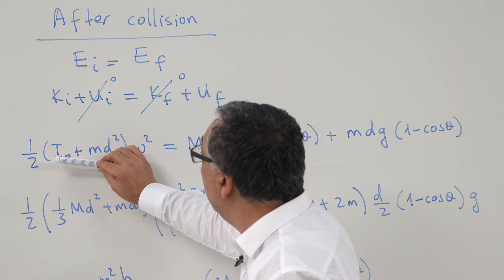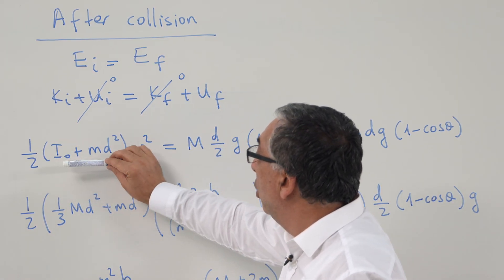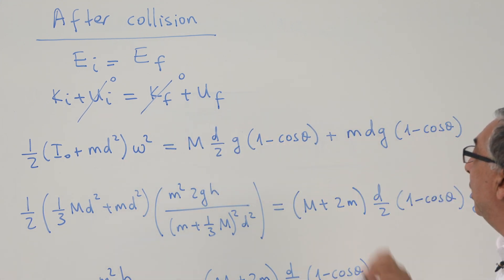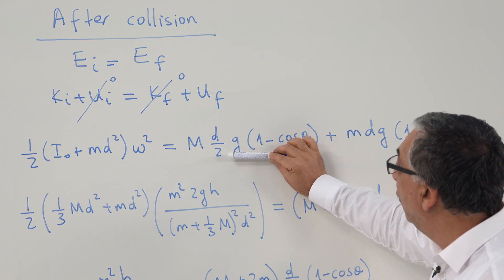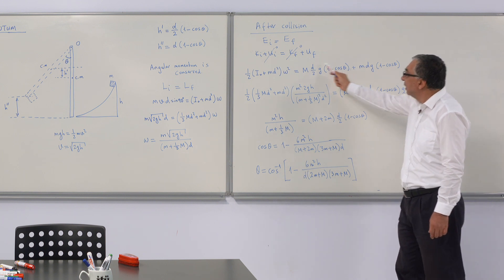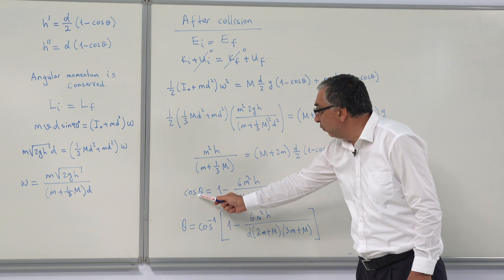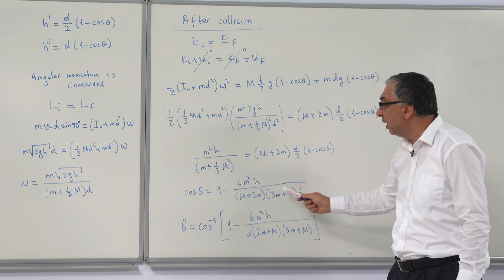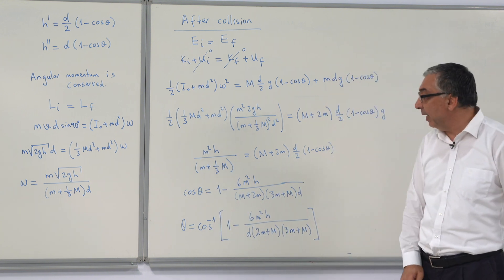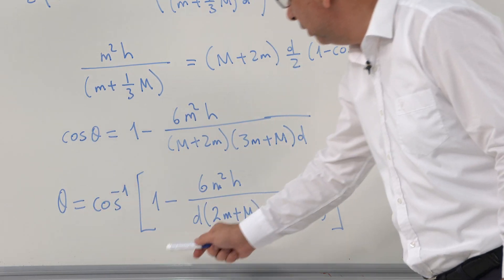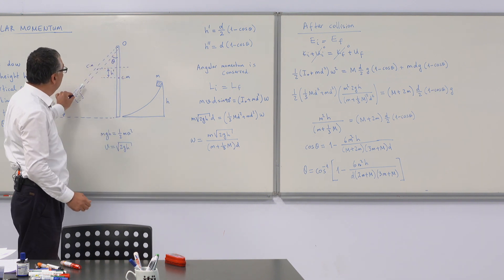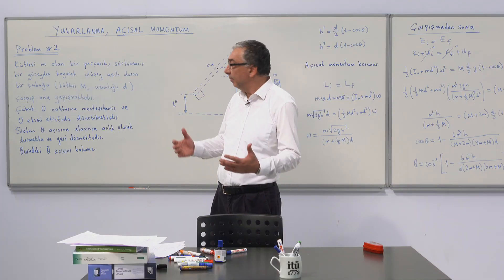The initial kinetic energy is (1/2)Iω². The final potential energy includes the potential energy of the rod and of mass m. After algebra, we obtain an expression for cos θ. Taking the inverse cosine gives us the maximum angle theta that the system can reach.